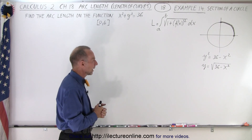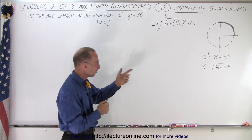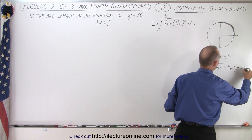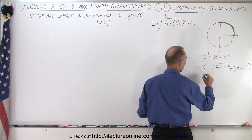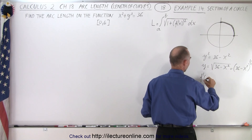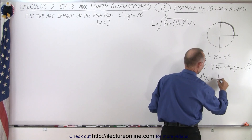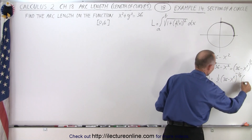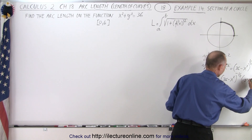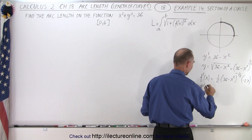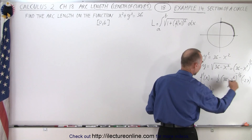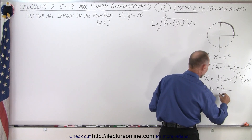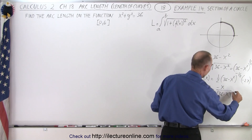Now we need to find the derivative. This can be written as the quantity 36 minus x squared to the one-half power. Taking the derivative, f prime of x equals one-half times 36 minus x squared to the minus one-half power, times the derivative of the inside, which is minus 2x. This simplifies to f prime of x equals negative x over the quantity 36 minus x squared to the one-half power.